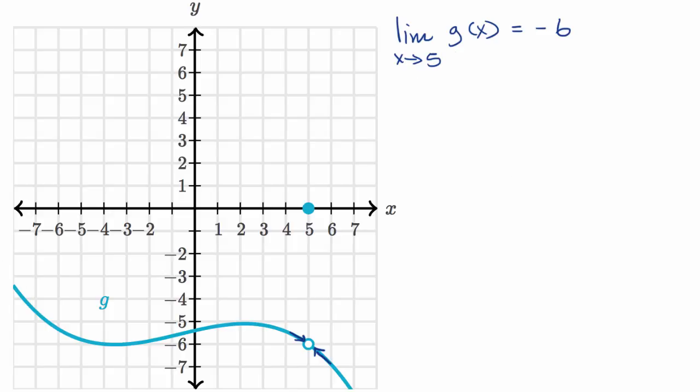For example, I could construct many different functions for which the limit as x approaches five equals negative six, and they would look very different from g of x. For example, I could say the limit of f of x as x approaches five equals negative six, and I can construct an f of x that does this that looks very different than g of x. And in fact, if you're up for it, pause this video and see if you could do the same.